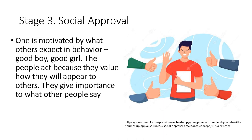In stage 3, social approval, one is motivated by what others expect in behavior — the 'good boy, good girl' orientation. People act because they value how they will appear to others and give importance to what other people say. The person is living up to social expectations and rules given by their surrounding peers. That social environment greatly influences their choices, decisions, and actions.